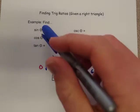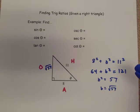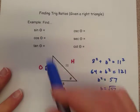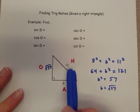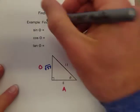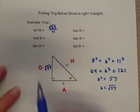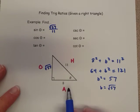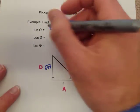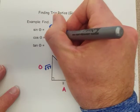Now, what we do is we go through and line up all the different pieces here. Sine is opposite over hypotenuse, and so that will be square root of 57 over 11. Cosine is adjacent over hypotenuse. That is 8 over 11.